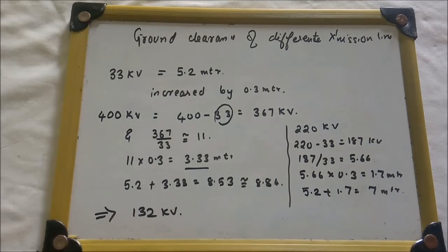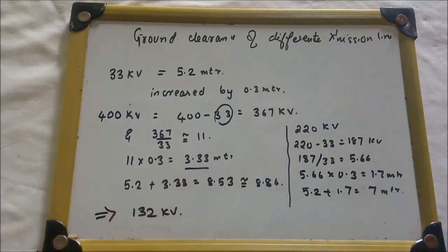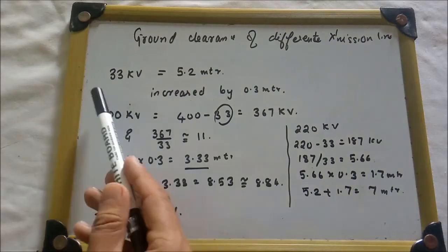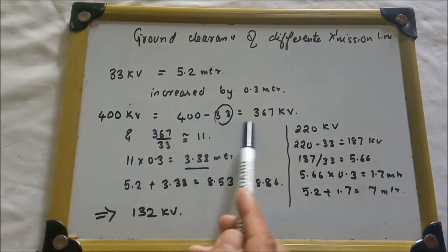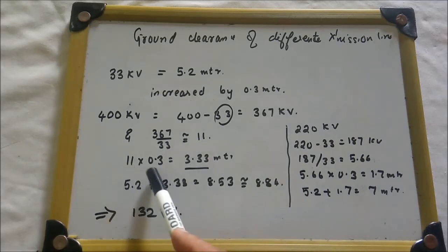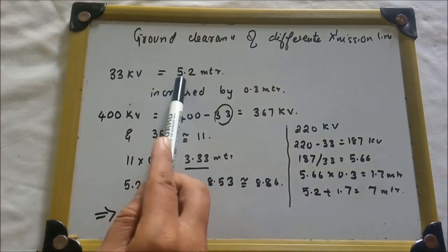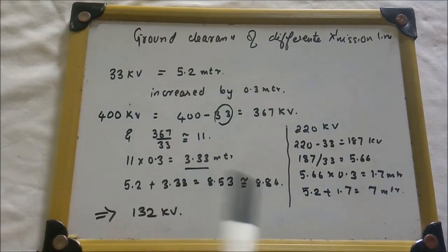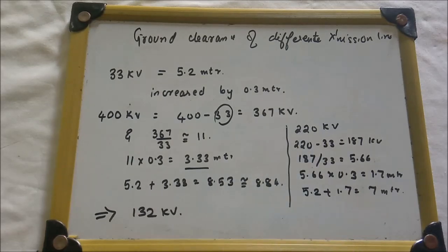So we know how to solve: the minimum ground clearance for 33 kV is 5.2 meters, and above 33 kV we increase by 0.3 meters. For 400 kV: 400 minus 33 equals 367, divided by 33 gives 11, multiplied by 0.3 gives 3.33 meters, added to 5.2 gives 8.84 meters. The same method applies for 220 kV and 132 kV.